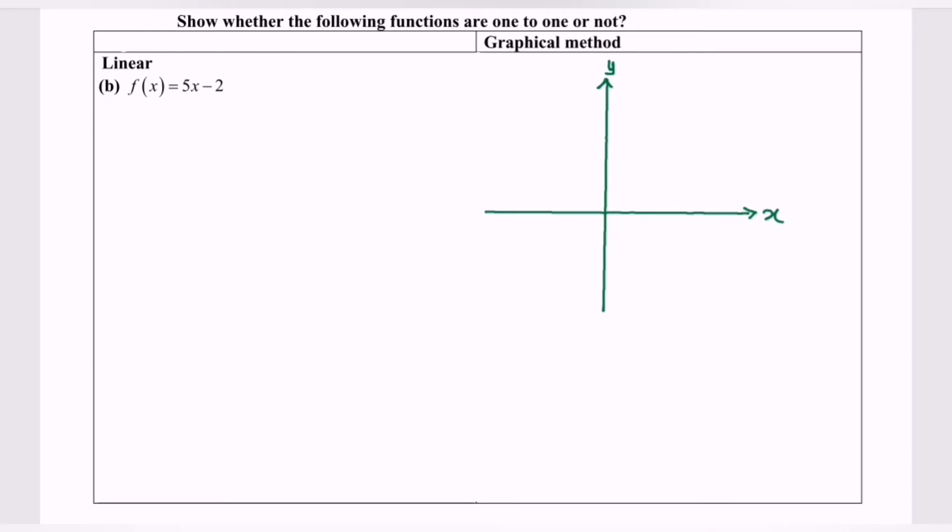Now I'm going to use the graphical method to determine whether the function is one-to-one or not. As we all know, linear is actually a line. In order to draw a line, we need two points.